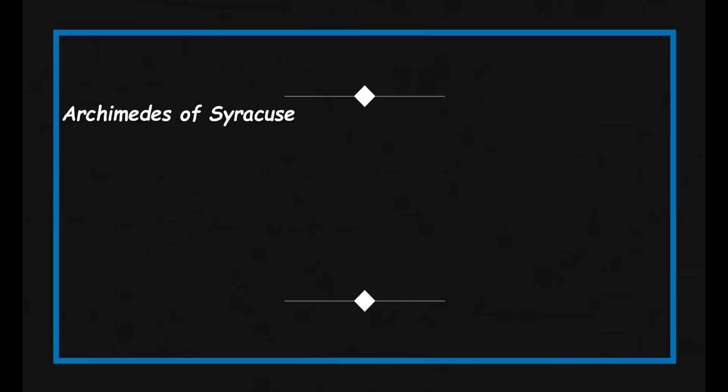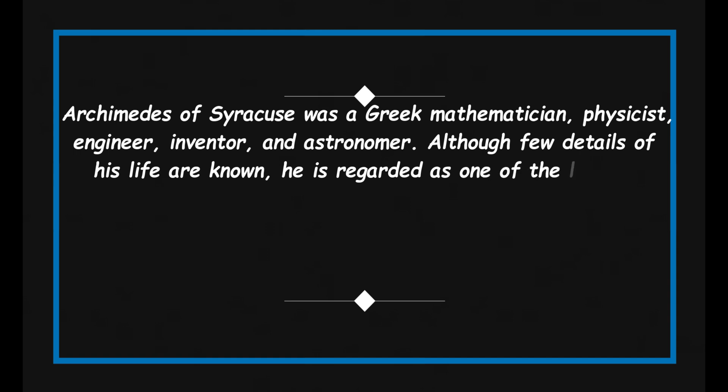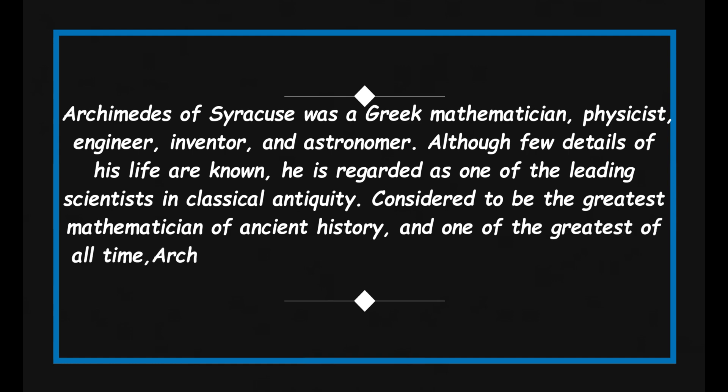Archimedes of Syracuse was a Greek mathematician, physicist, engineer, inventor, and astronomer. Although few details of his life are known, he is regarded as one of the leading scientists in classical antiquity. Considered to be the greatest mathematician of ancient history, and one of the greatest of all time.